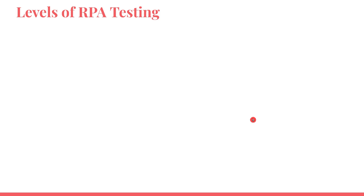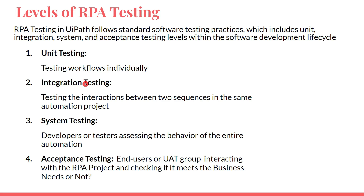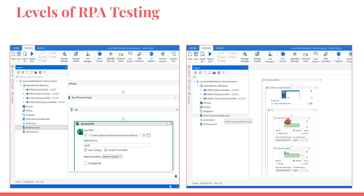RPA testing in UiPath follows standard software testing practices. If you have a testing background you will know these well; if you are new, it is important to understand a few terms. When developing software, testing is a vital part you should not miss. The standards are categorized into: unit testing, integration testing, system testing, and acceptance testing. Let's understand each one in the context of RPA.